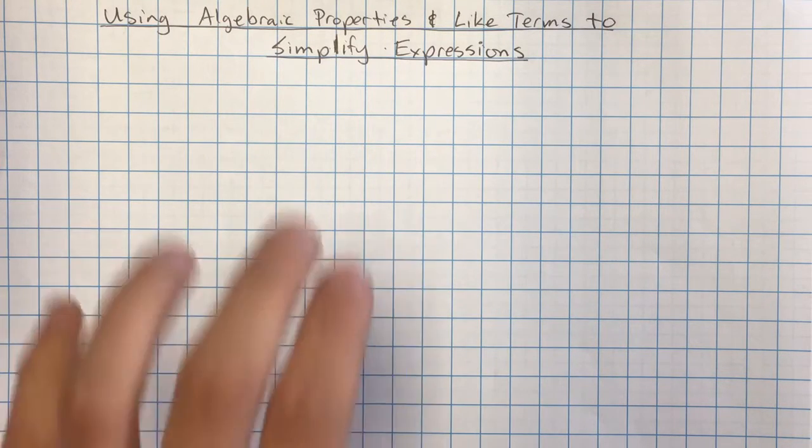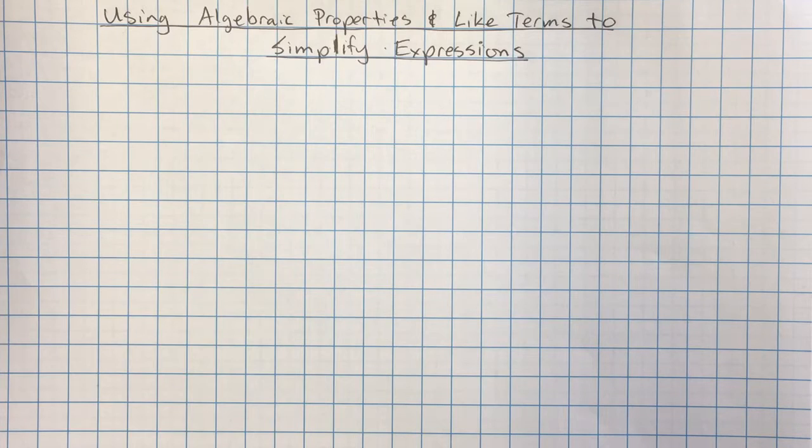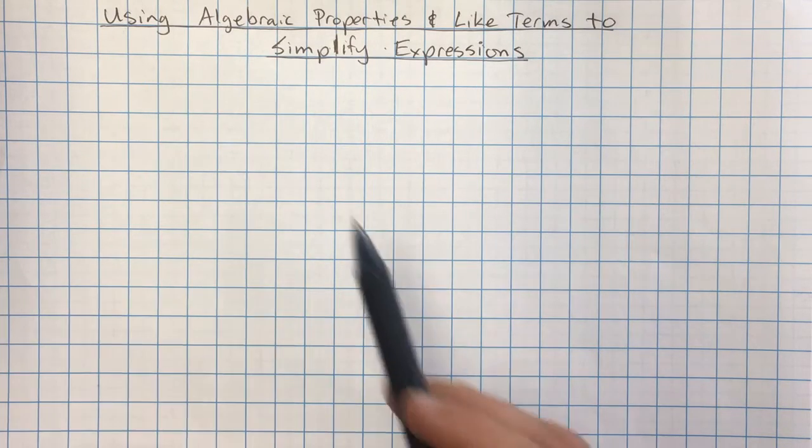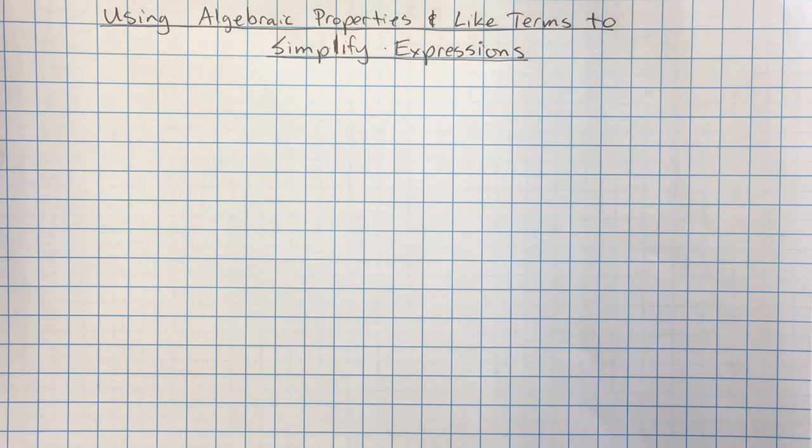All right, so we're going to be looking at using algebraic properties and like terms to simplify expressions. When I say algebraic properties, I'm talking about things like the distributive property, the commutative property, the associative property. There's videos on those so you can look back at mine. And like terms, I'm also just posting a video on that as well.